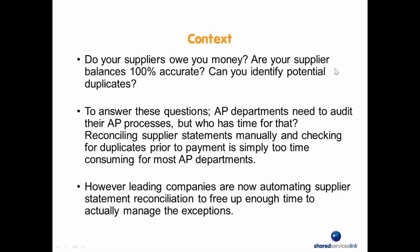A good starting question for this is: do your suppliers actually owe you money today? Are your supplier balances 100% accurate, and are you confident that they're accurate? Do you know exactly how much your suppliers owe you? How much time does it take you as an organization to figure that out, and to what degree is it heavily manual today? How much is it actually costing you as an organization to answer these key questions?